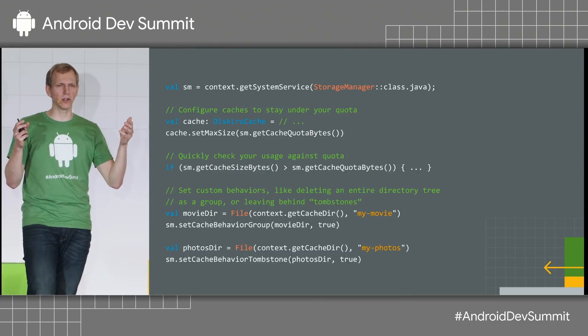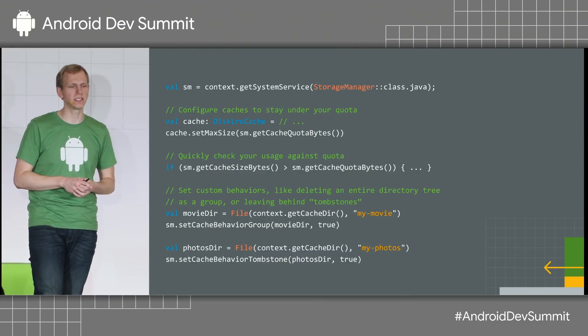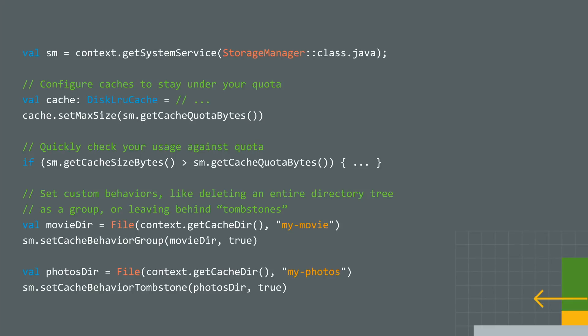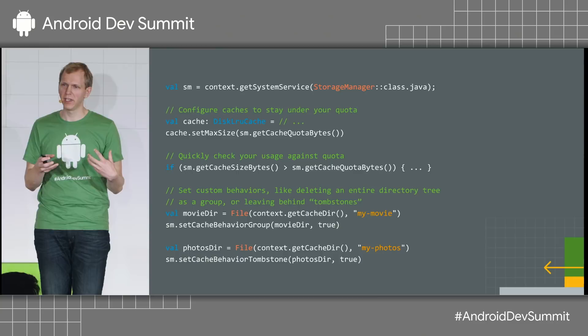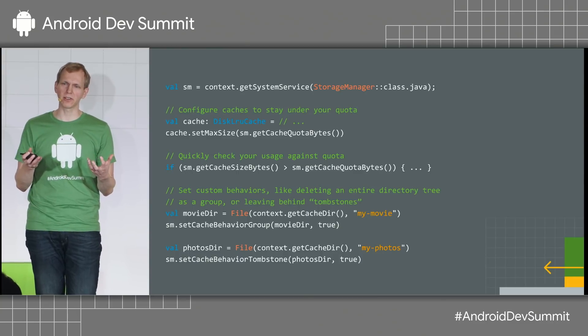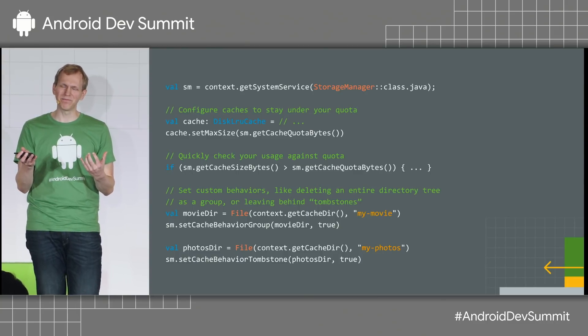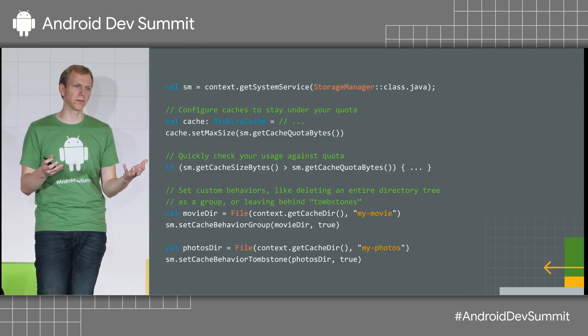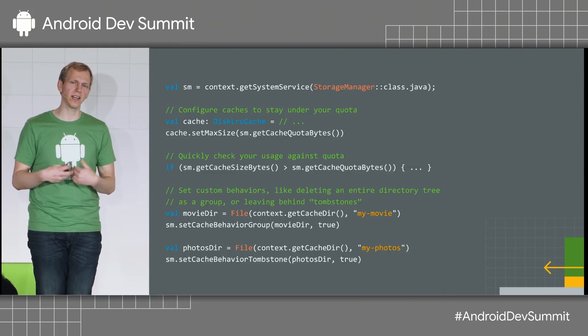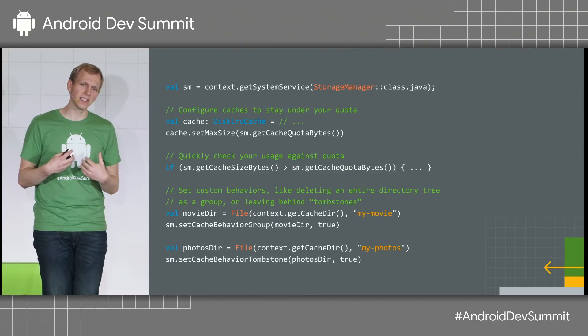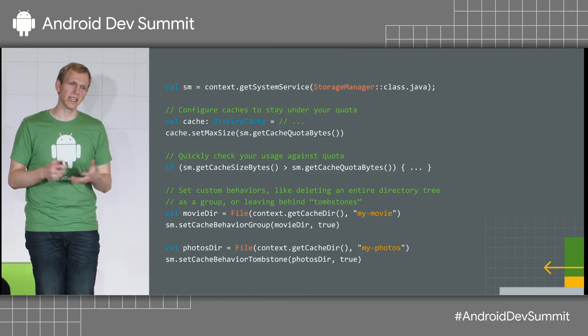Another feature added in O is cache behaviors. You may download multiple files that should be treated as a unit — for example, a movie file and a subtitles file that go together. If one gets deleted, the other isn't really useful. Cache behaviors let you tell the OS that if it needs disk space, it should delete both files at the same time.